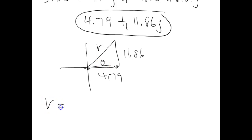To find r, we say 11.86 squared plus 4.79 squared square root. That's Pythagorean Theorem. This gives me an answer of 12.79.